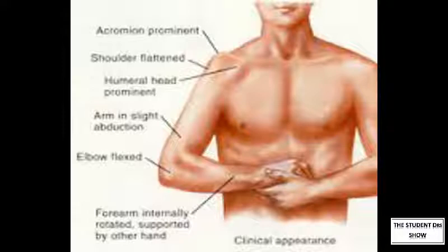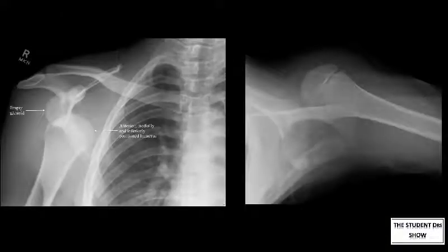When examined, there will be a hollow contour of the shoulder and fullness below the coracoid process. It is important to examine the axillary nerve's motor function and sensory function, as well as the musculocutaneous nerve. The shoulder is x-rayed in three views: namely the true anterior-posterior view, the axillary lateral view and the modified axillary, which must be requested.